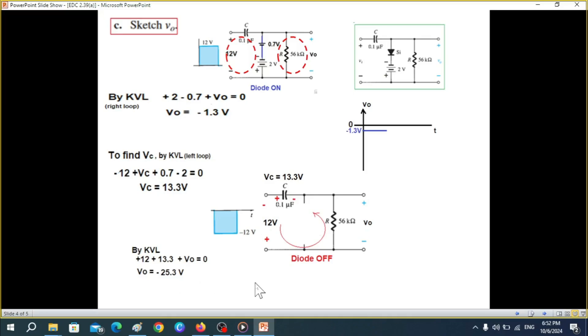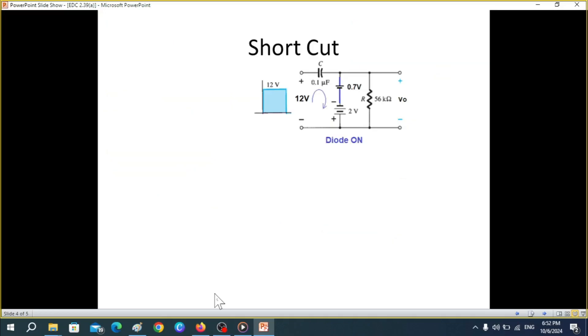So how do we plot this now? We'll just move ahead of this. So ahead of this, we'll go to minus 25.3 for the time duration of 0.5 ms, and then it'll come back and this process will continue.